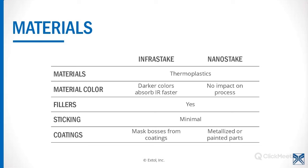As far as coatings, this is another area where Infrastake varies from Nanostake. With infrared, we have to make sure that the bosses are masked from any chroming, metallization, overspray, or anything like that — it would simply be burned off or affect the process. With Nanostake, it doesn't matter. Nanostake will power right through any of those finishes.